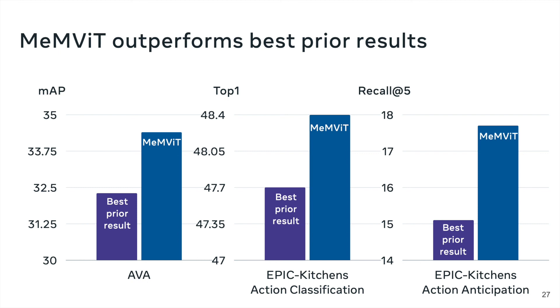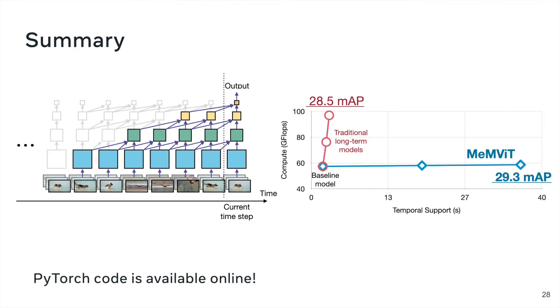This suggests that despite being simple and efficient, MEMVIT can indeed effectively leverage long-term context for more accurate recognition. In short, in this work, we propose MEMVIT, a memory-augmented MVIT that hierarchically attends prior memory efficiently. It is efficient, long-term, and accurate. The code is available online. Thank you.